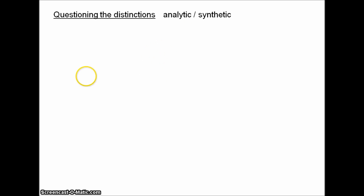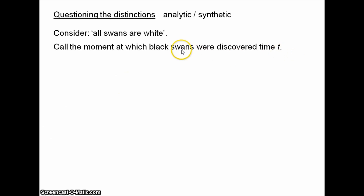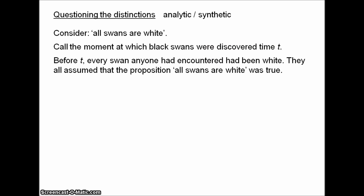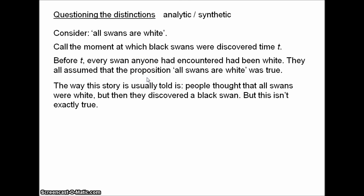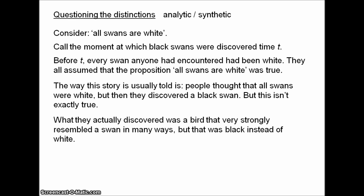Consider the famously falsified proposition: all swans are white. Let's go back to the time when black swans were first discovered — call that moment time T. Before T, every swan that anybody had encountered had been white, and they all assumed the proposition 'all swans are white' was true. But the way this story is usually told isn't really true. What they discovered was a bird that very strongly resembled a swan in many ways, but was black instead of white — perhaps like a swan in every single way except its colour.